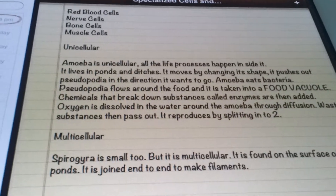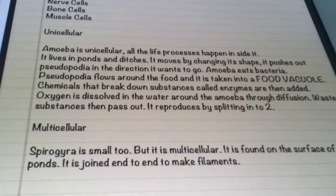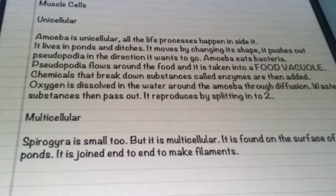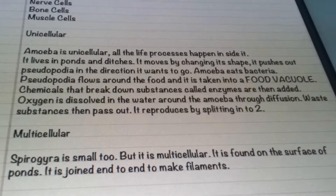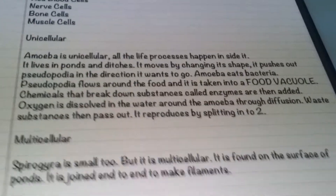The amoeba eats bacteria — that is its food. The pseudopodia flow around the food. For example, the amoeba will come, circle the food, and then the food will come inside the amoeba.